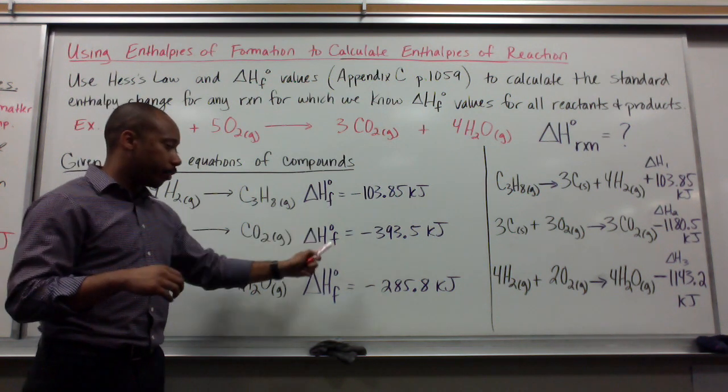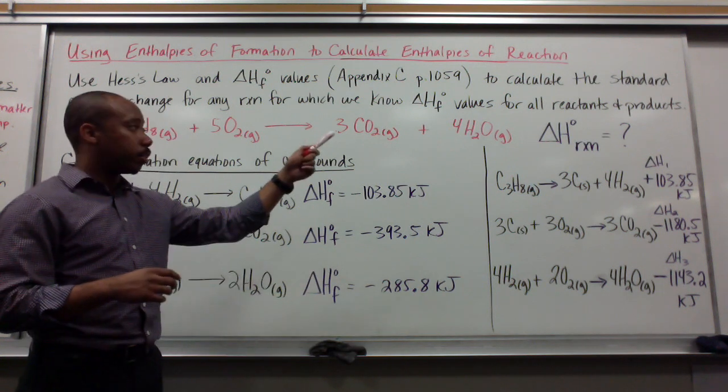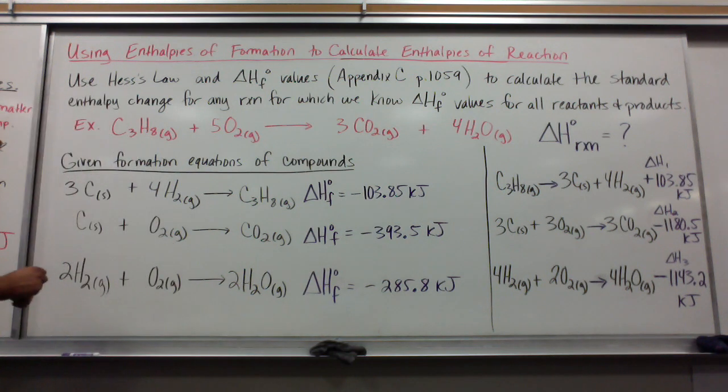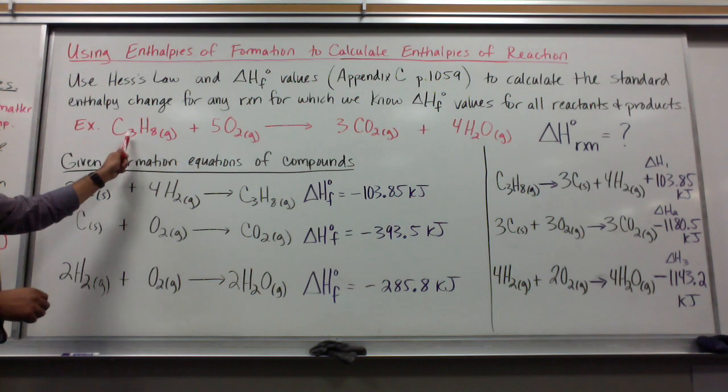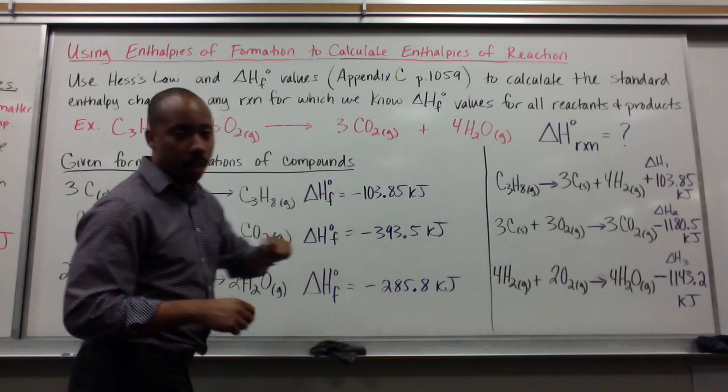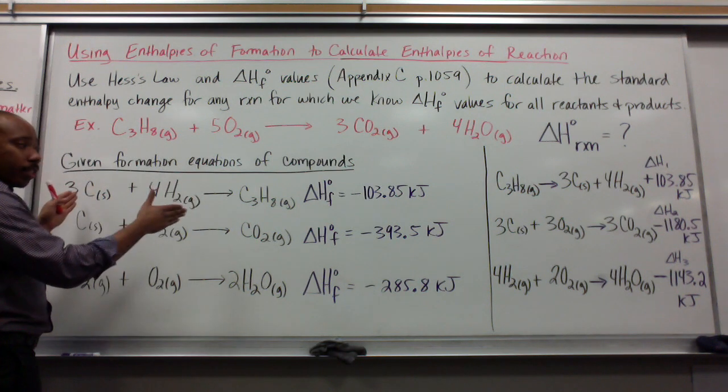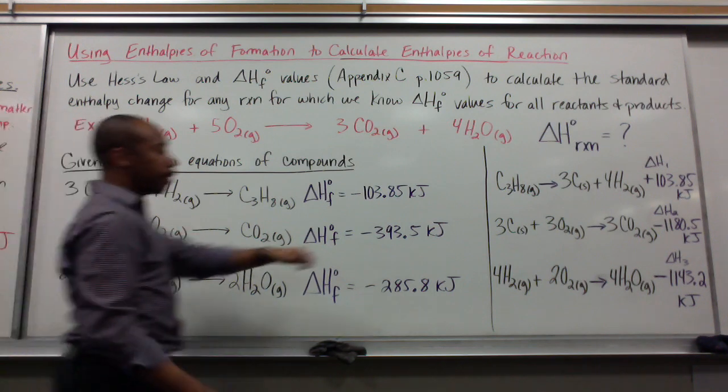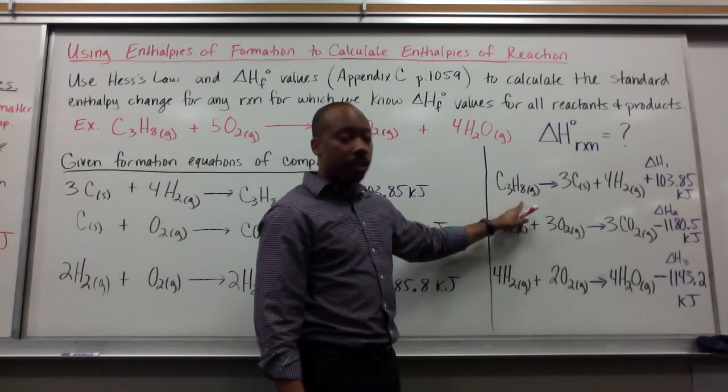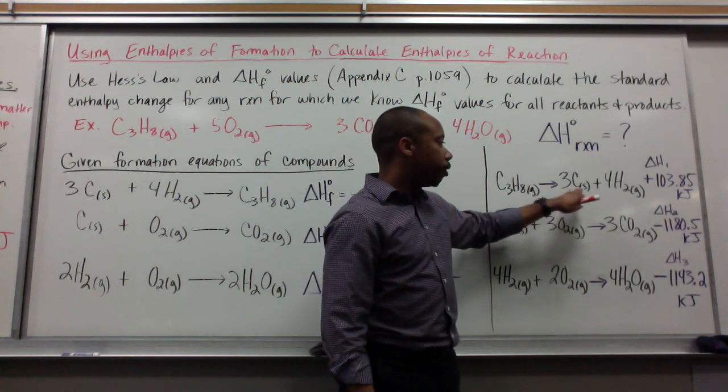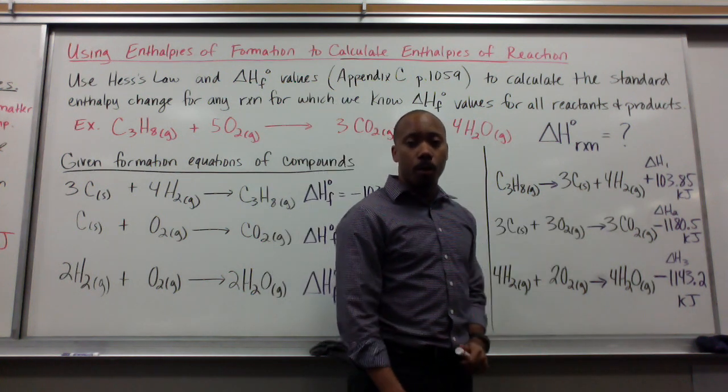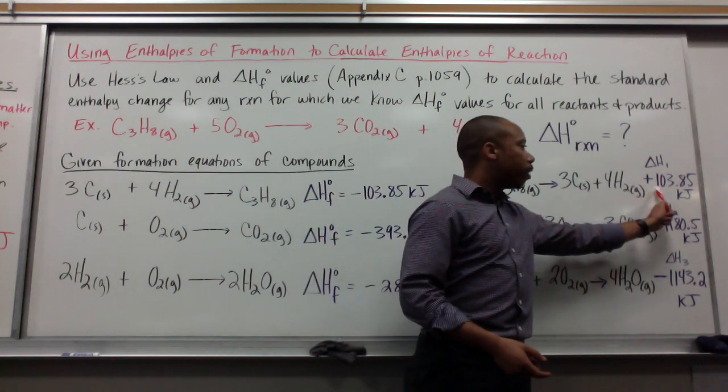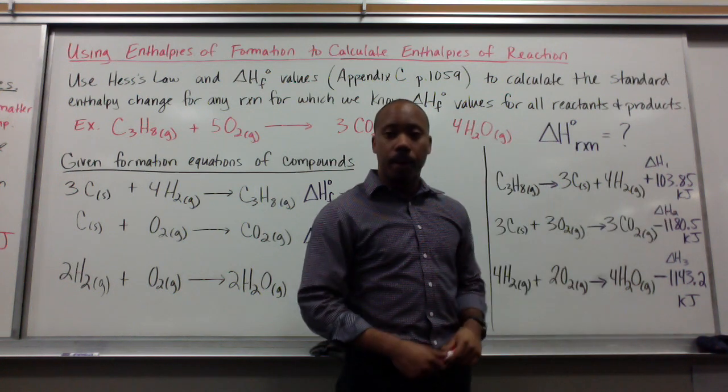So now, we're interested in how propane reacts to form our products here. This is a formation equation. So this is actually the opposite of what we want. We want to flip this around. C₃H₈ decomposes into three moles of carbon and four moles of hydrogen gas. When we flip that, our reaction is now endothermic, and we write the number as a positive 103.85 kilojoules.